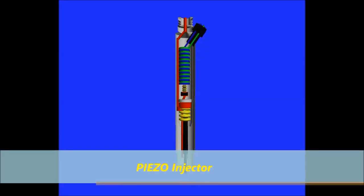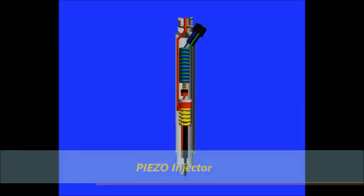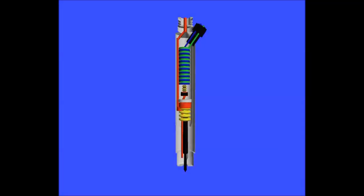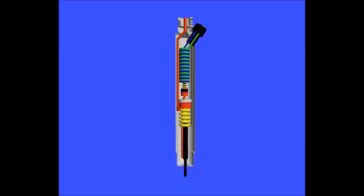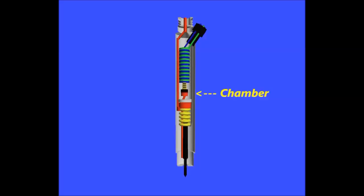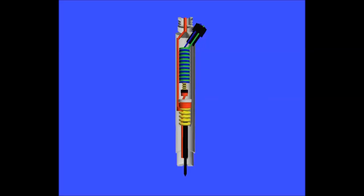Basically what it is, is a stack — you can see the stack here. It's like blue and green, and that stack is a crystal stack. That's why it's called PISO — PISO means crystal. That's the one that actuates the injectors, the injector pintle, but not directly. If you look at it in the center, it's like a little chamber — a hydraulic chamber — and that's the one that actually pushes the pintle back and forth. There is no direct link between the stack of crystals and the injector pintle.